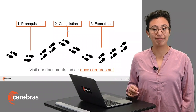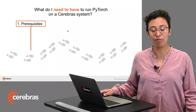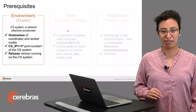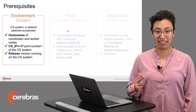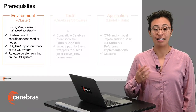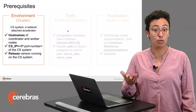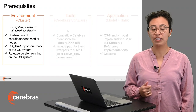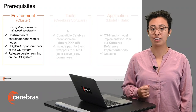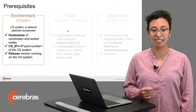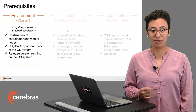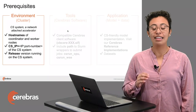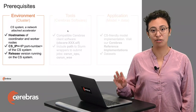Let's start with the prerequisites. There are three different types: the environment, the tools, and the application. The environment relates to the CS system being a network-attached accelerator to a cluster. We need the host names of the coordinator and worker nodes, the CS IP, and the port number. We also need to know the release version running on the CS system, which must be compatible with the additional tools we are going to use.